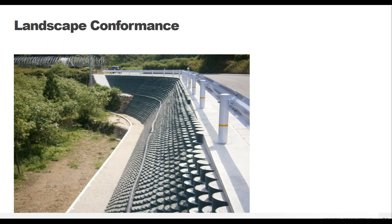The flexibility of the GeoWeb panels allows walls to conform to existing landscapes and structures. It's easy to create curves and install things like guard rails right at the top edge of the wall, so you can maximize the available space for roads and infrastructure above the wall structure.